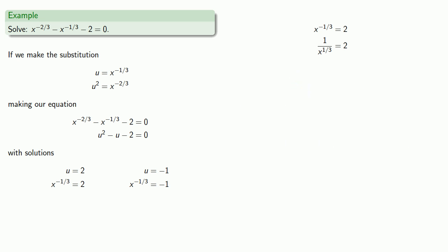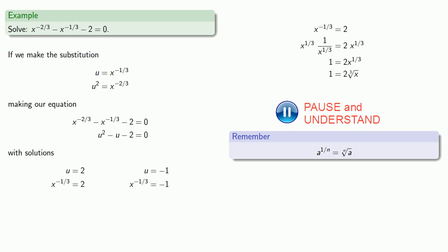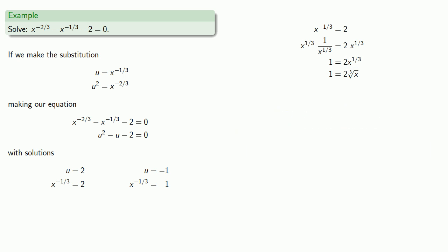Now we have a quotient. So let's simplify this by multiplying by the denominator x to power 1 third. So we'll multiply on the left and on the right. Over on the right-hand side, we have 2 times x to power 1 third. And remember that a fractional exponent corresponds to a root. So this x to power 1 third is really the cube root of x. So again, over on the right-hand side, we have a product. So we'll divide both sides by 2. Over on the right-hand side, we have a root. So now we can raise both sides to the third power. And that gives us x equal to 1 eighth as one of our solutions.